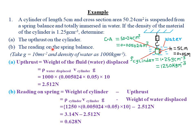For part B, they want us to find the reading on the spring. This particular spring reads the difference between the upward and the downward force. The only upward force is the upthrust force, and the only downward force is the weight of the cylinder. Therefore, the difference between the upthrust and the weight of the cylinder gives us the reading on this particular spring, because upthrust makes a body appear lighter than it really is.